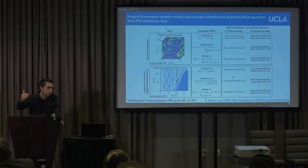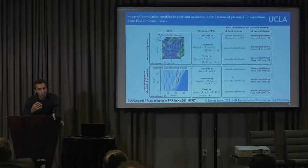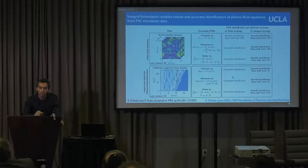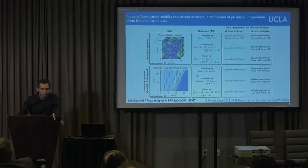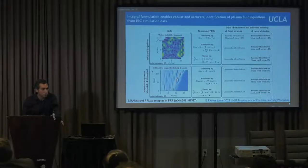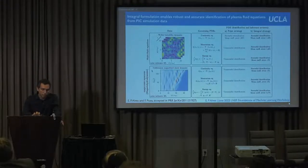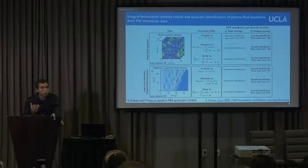We have taken this to much more complicated problems. We've used this to discover the full hierarchy of known reduced models from plasma physics, in particular the fluid equations of plasma physics — equations that describe statistical averages of the kinetic equation. By looking at progressively more complicated problems, we've stress-tested these methods, and we've been able to show that we can recover textbook reduced descriptions, including the widely used single fluid magnetohydrodynamics, all from the data of first principles simulations.